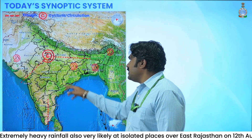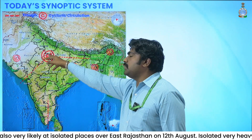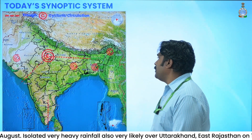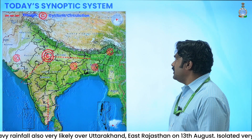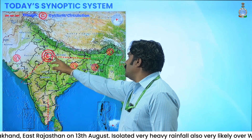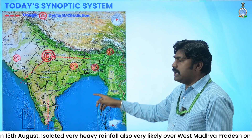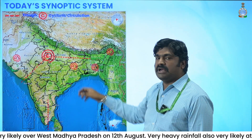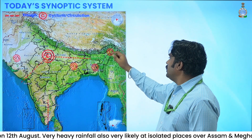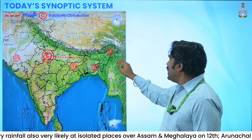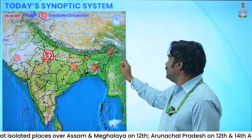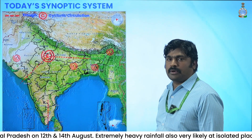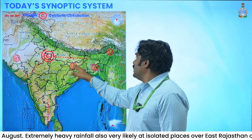A cyclonic circulation lies over west Madhya Pradesh, connecting to the neighborhood up to 5.6 kilometers mean sea level. A trough passes across Uttar Pradesh, Bihar, and up to east Bangladesh at the mid-tropospheric level. A shear zone lies over east Assam at 3.1 kilometers mean sea level, and another shear zone over Bangladesh also at around 3.1 kilometers mean sea level.